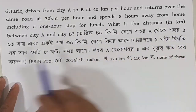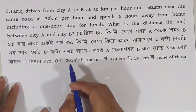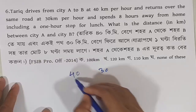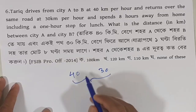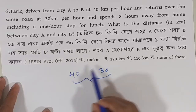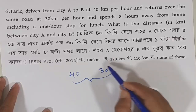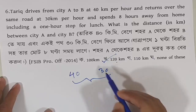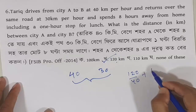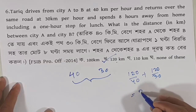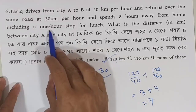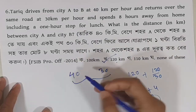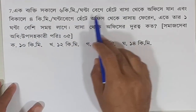Problem 5: A car travels at speeds of 15 km per hour, then 24 km per hour, and on the same road at 30 km per hour, spending 8 hours away from home including a 1-hour stop for lunch. What is the distance in kilometers between city A and city B? The answer is 120 km. The option 120 km is correct.